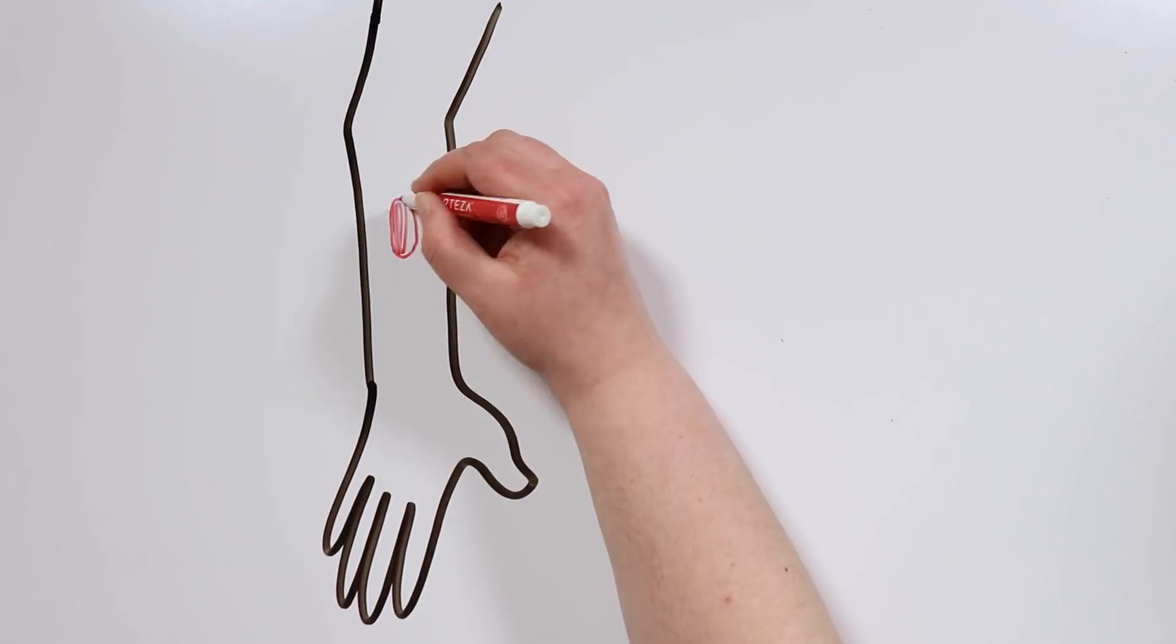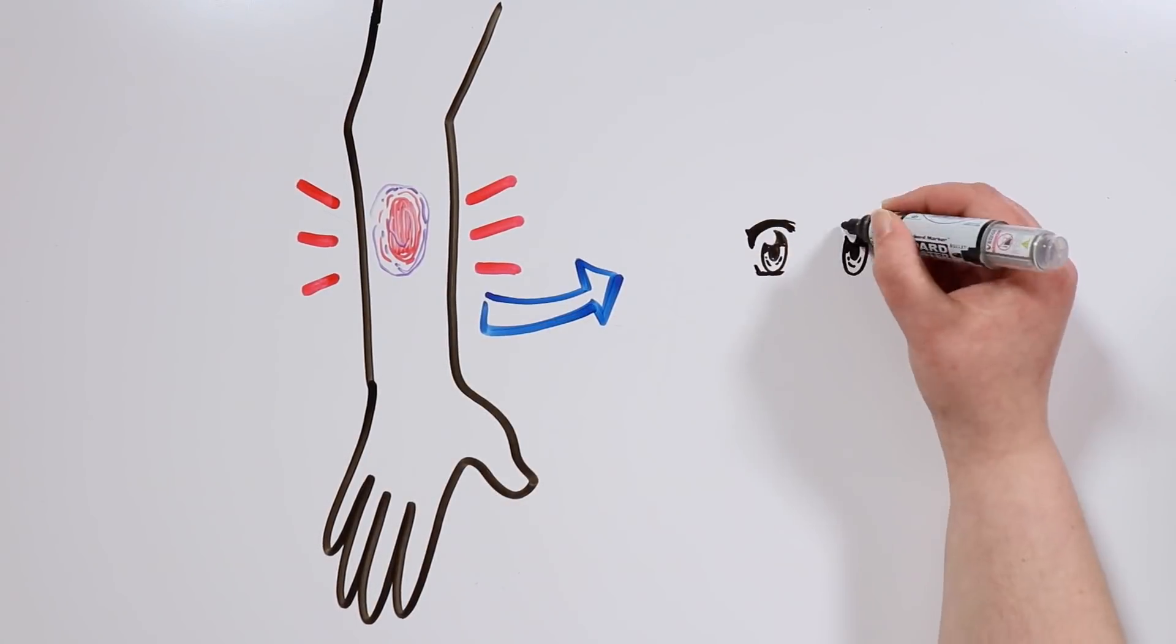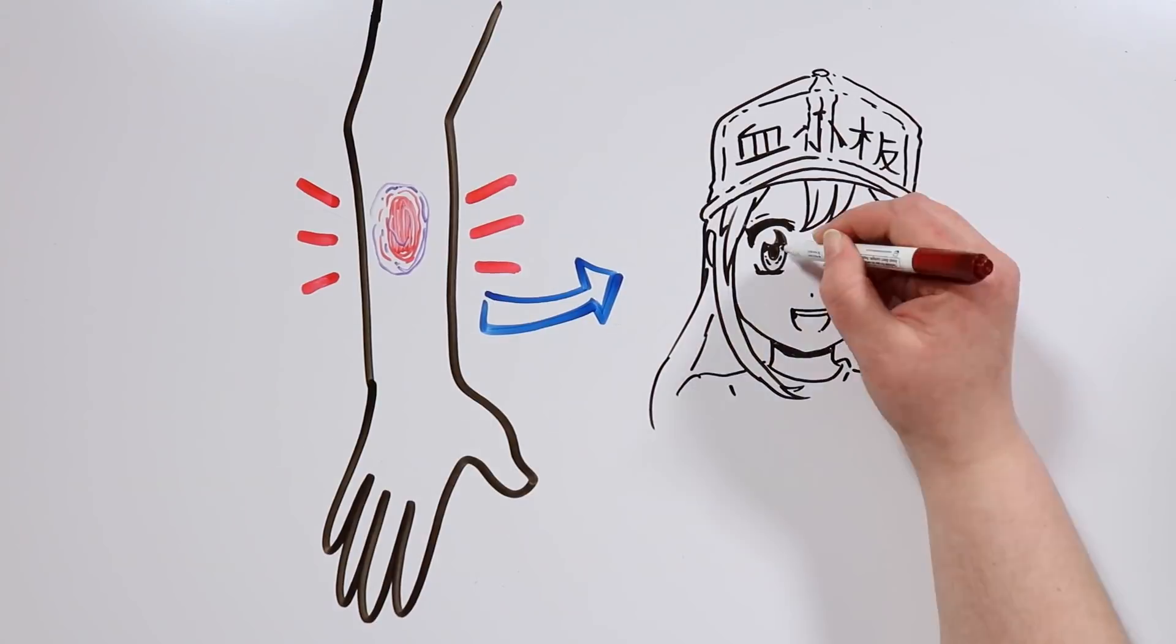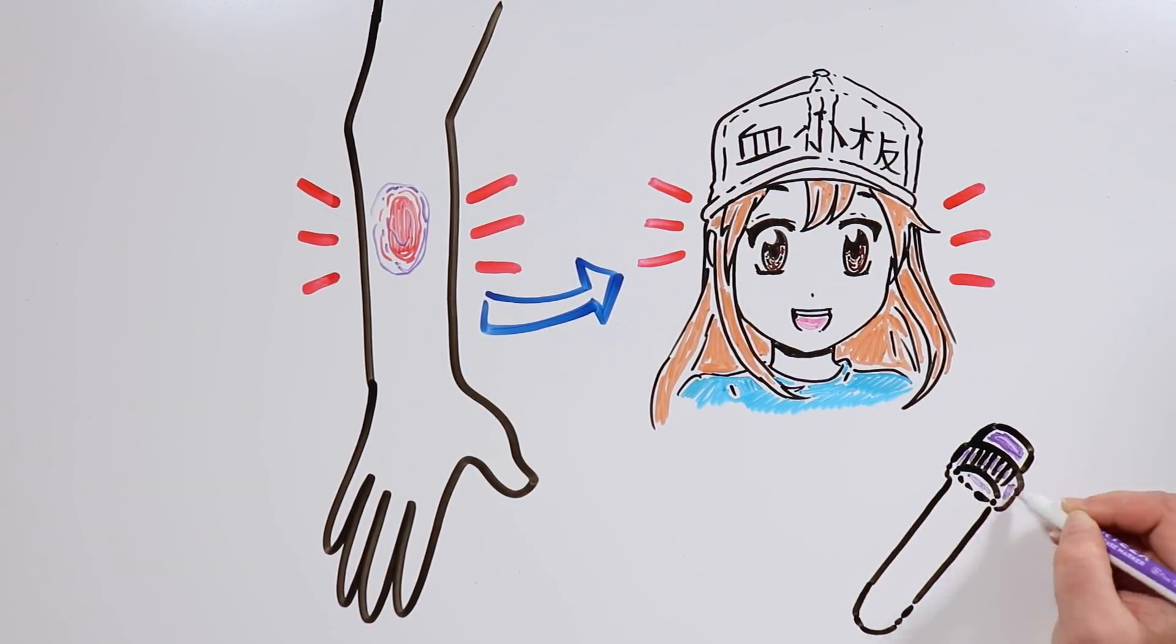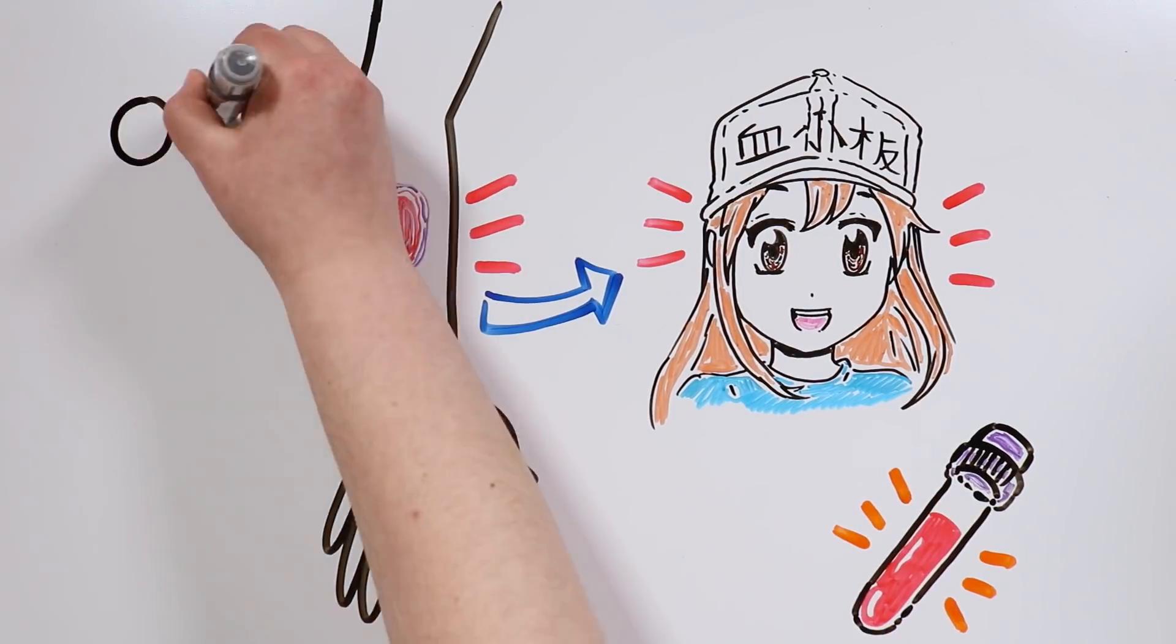There are people who can develop a bruise just by the rubbing of their clothes with their skin, which usually happens if you have a low platelet count. You might be familiar with them if you've ever had a blood test.